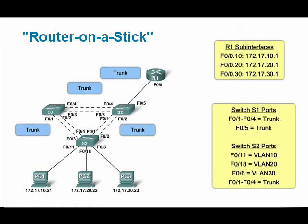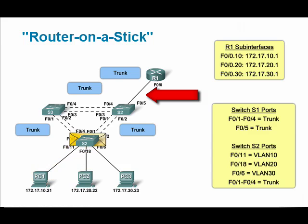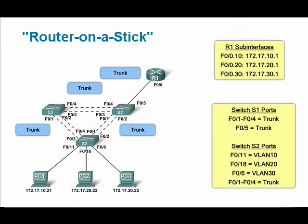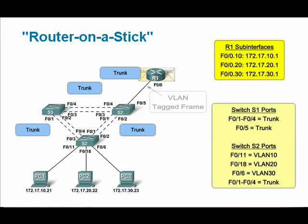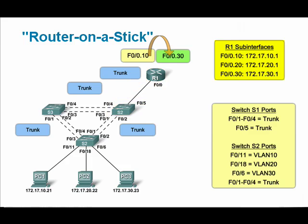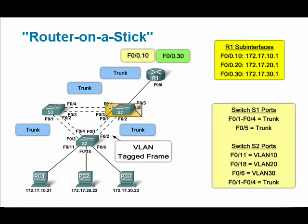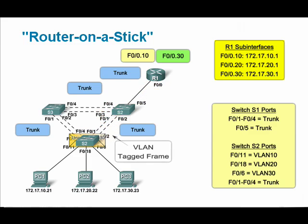Router-on-a-stick VLAN configuration enables networkers to configure a single trunk port between the switch network and the router, regardless of the number of VLANs. The single physical router interface is configured into multiple logical sub-interfaces. In this example, you can see that the F01 physical interface has been divided into three logical sub-interfaces, one for each VLAN. The IP address of each sub-interface serves as the default gateway for its respective VLAN.